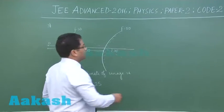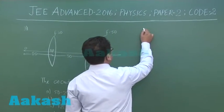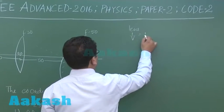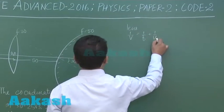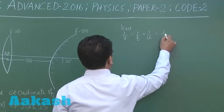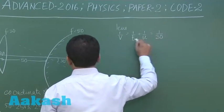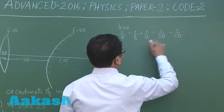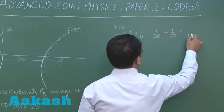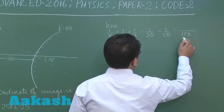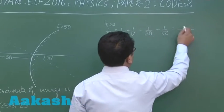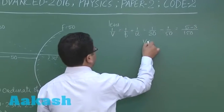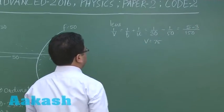For the convex lens, applying 1/V = 1/F + 1/U, we get 1/V = 1/30 minus 1/50. That gives us 5 minus 3 over 150, so V equals 75 centimeters.